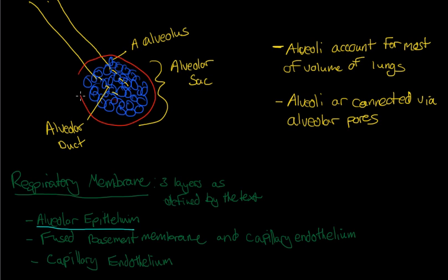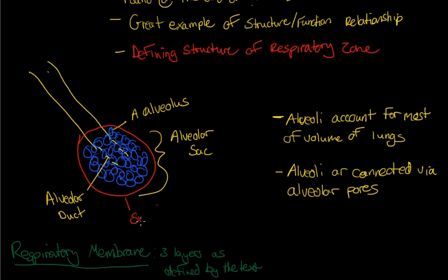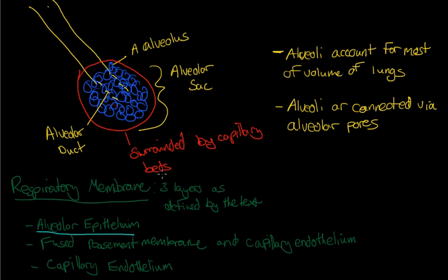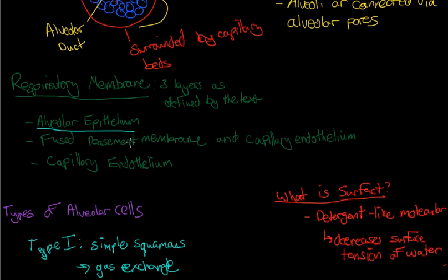Surrounded by capillary beds. And that's what's going to make this respiratory membrane possible, is all the capillaries that are running through there that allow for this gas exchange. So you have deoxygenated blood going and transferring CO2 out of the lungs and picking up O2. And now that should make sense to how the respiratory membrane is created.